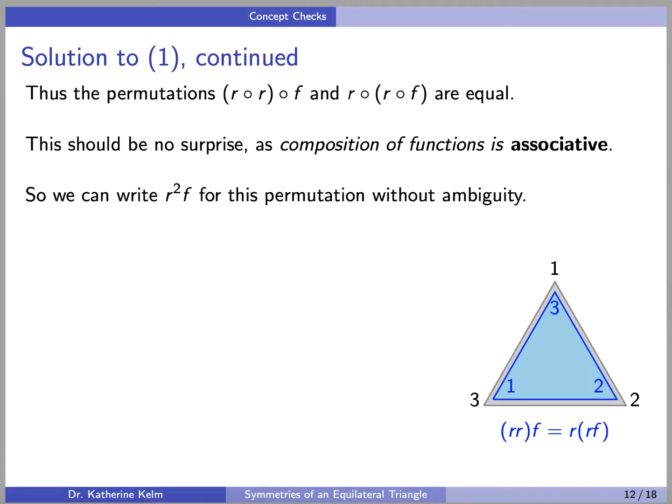And this makes sense because composition of functions in general is associative. So we can write R squared F for this permutation without ambiguity.